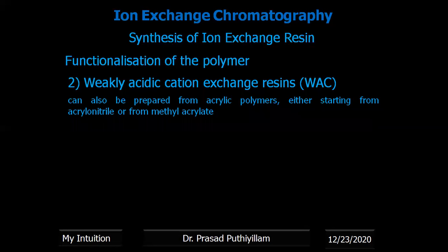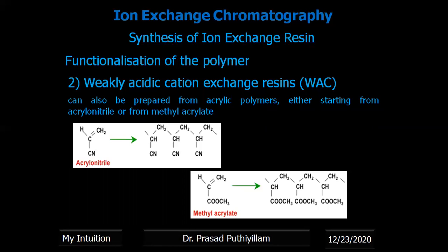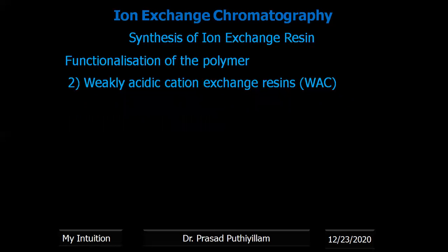Weakly acidic cation exchange resins can also be prepared from acrylic polymers, not only styrene-based ones. Starting materials like acrylonitrile or methyl acrylate can be used. Using acrylonitrile gives polyacrylonitrile (with CN groups), and using methyl acrylate gives polyacrylate (with COO-CH3 groups). Both need to be converted into a carboxyl functional group (COOH).